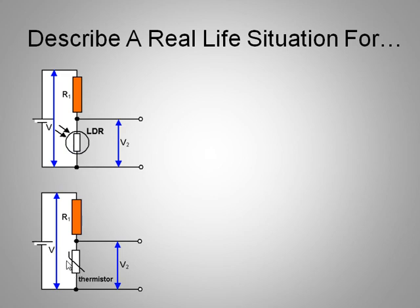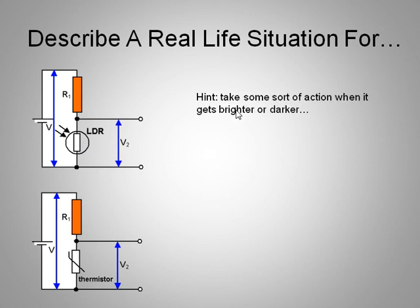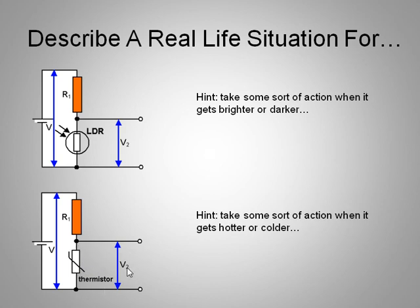And down here, we have a very similar circuit. But instead of the light-dependent resistor, we have a thermistor. So can you imagine any kind of applications for these devices? If you can't, the hint might be here. You need to do something. The circuit needs to take some sort of action or give a signal or change somehow. When the light changes, the ambient light changes. And likewise, this one down here, you need to take some sort of action when the temperature changes.